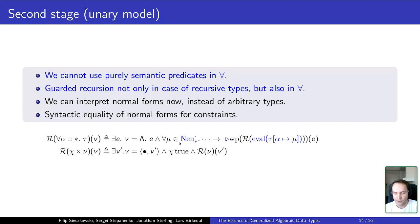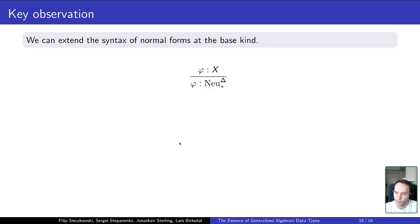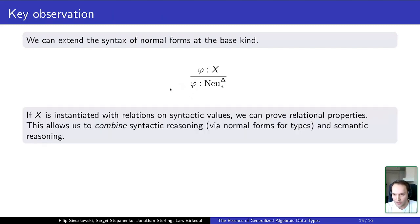So the way we can solve it is we can notice that NBE is rather simply implemented for types at the base kind. So what we can do is to extend our syntax of normal forms with an additional constructor for ground kinds by saying that given an element of arbitrary type X, we return a neutral form in an arbitrary context at a ground kind. And after that, if we instantiate X with relations on syntactic values, we finally can construct a relational model.